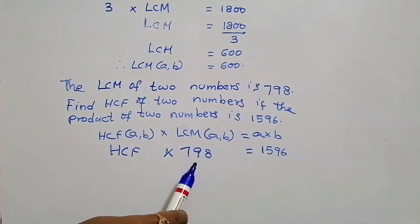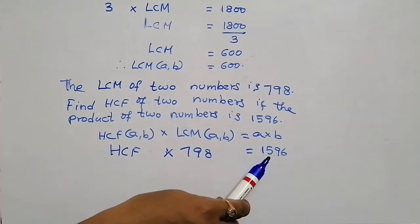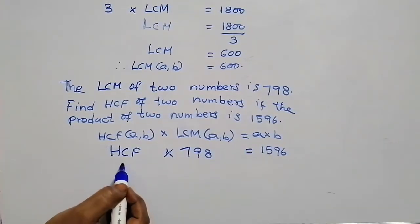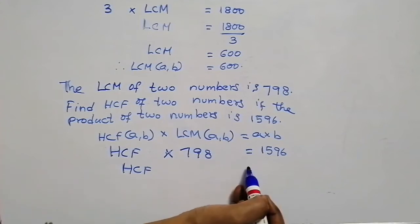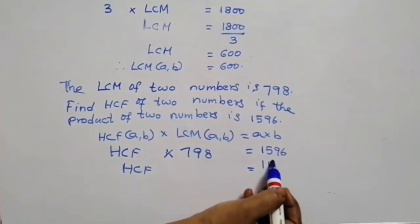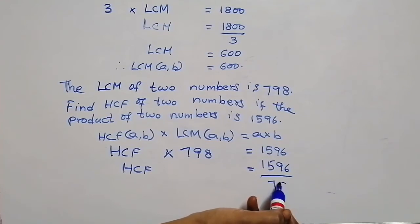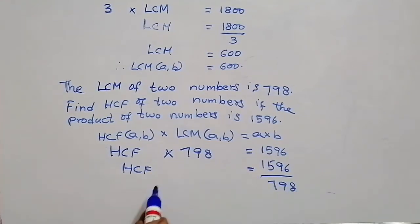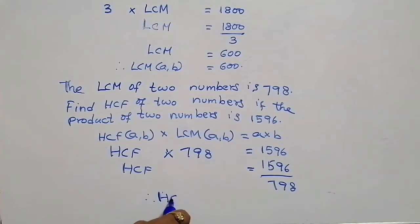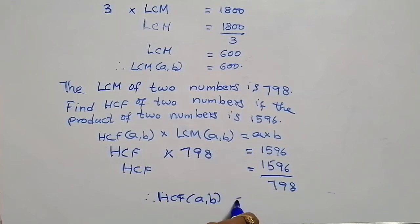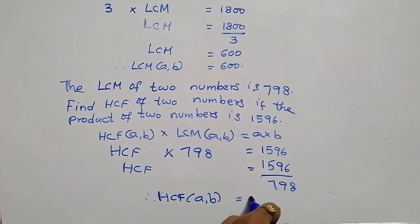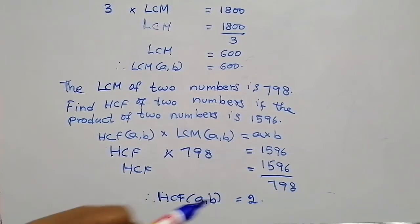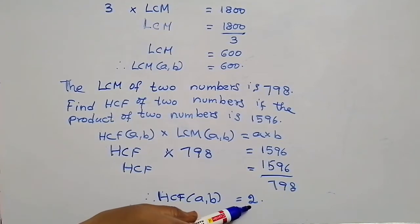Now transpose 798 towards the right hand side. We will get HCF is equal to 1,596 divided by 798. Therefore, HCF of two numbers A, B — after division — is 2. So HCF of two numbers A, B is 2.